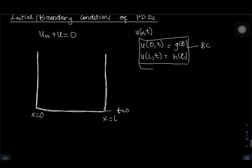So at time t equals zero, u(x, 0) equals some g(x) — this is an initial condition. For initial conditions, you're checking the solution at the beginning of time, at t equals zero. When you're not fixing time but instead go to the boundaries or borders of the domain and check the behavior of the solution there, then you're talking about boundary conditions.